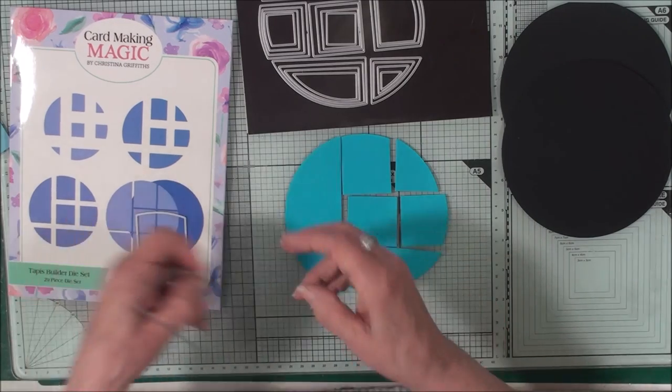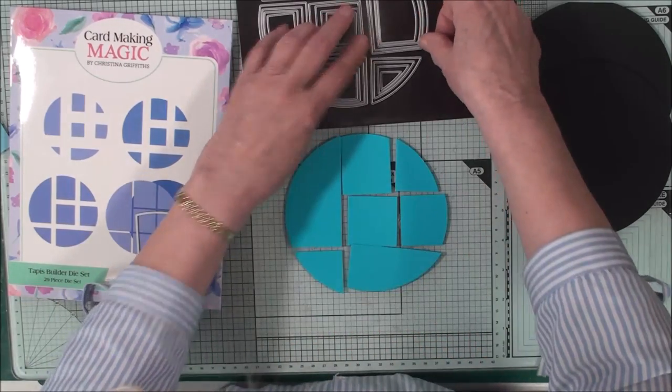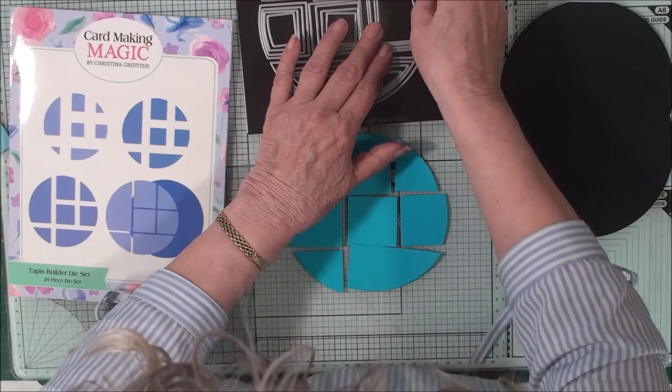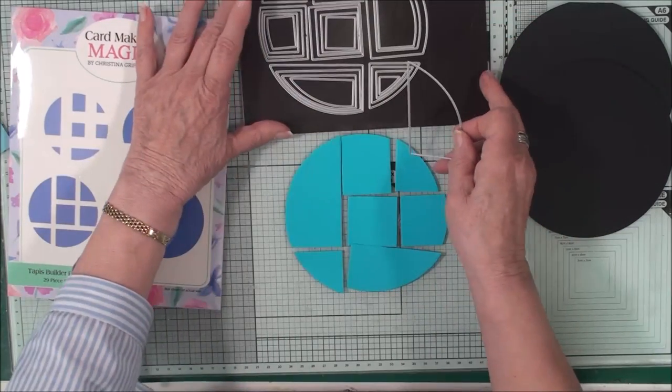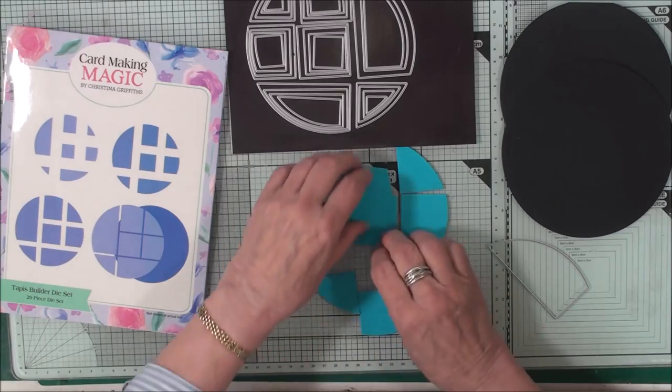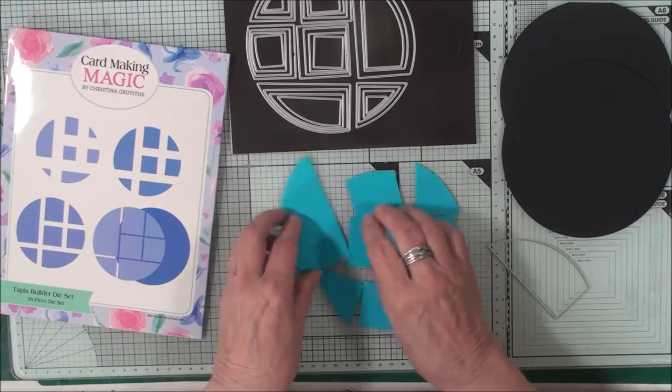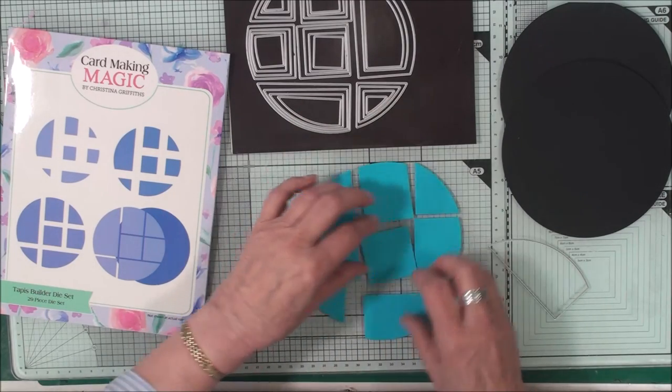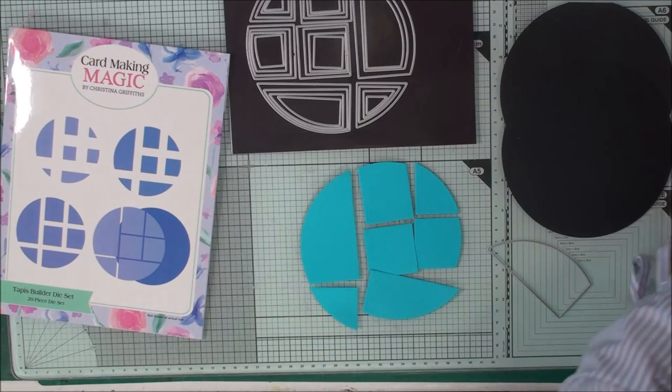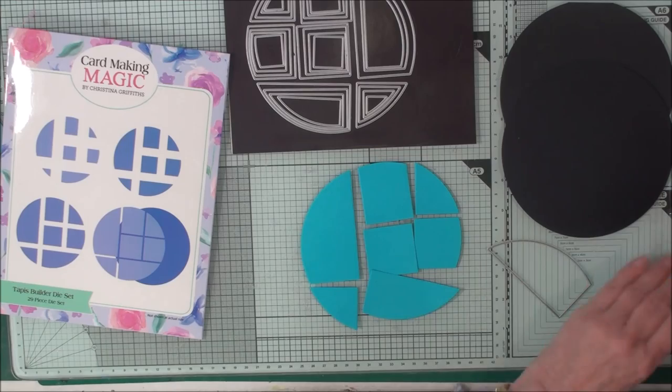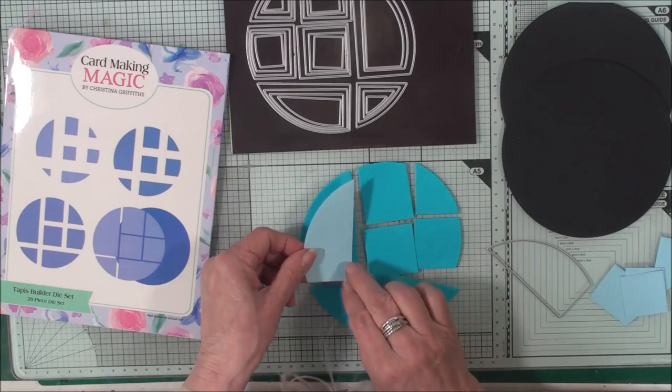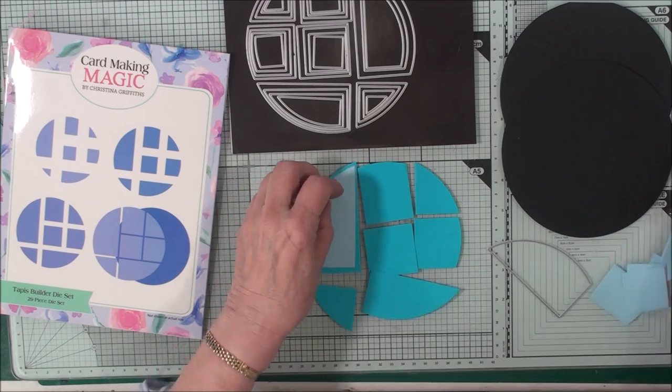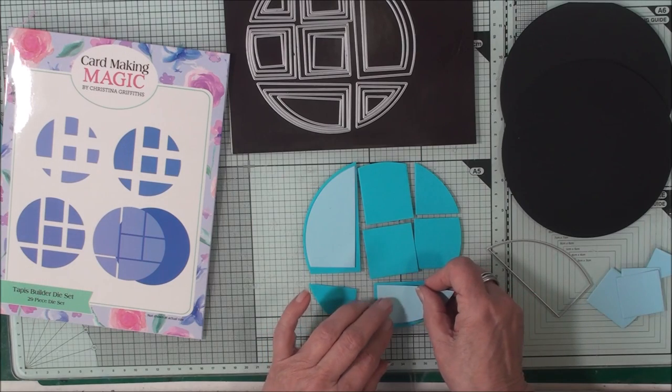So there we are. Once you've done that, put your first layer of dies back on your magnetic sheet and take the second layer of dies up. Take the second one of each of the dies and we're going to cut another layer. For this I've gone to a paler turquoise and I've cut the shapes again and they will marry up with the shapes that are already down on your mat.